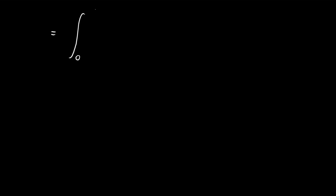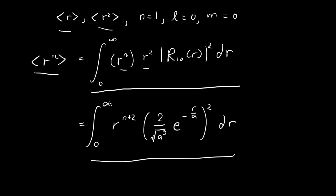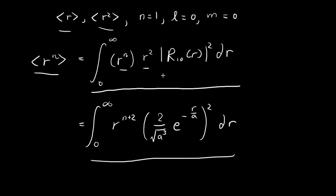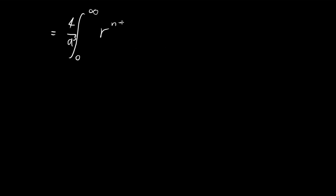We have an integral from 0 to infinity, and we can pull out the constants. We get 4 divided by a to the power of 3 — don't forget we need to square R₁₀ because of the absolute value squared. In the end we have r to the power of n+2 times e to the power of negative 2r over a, dr.